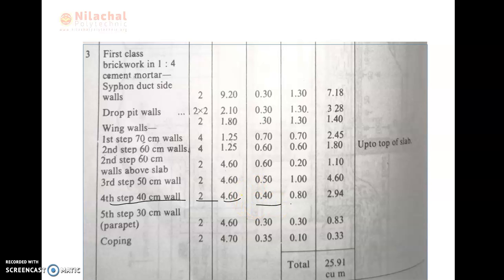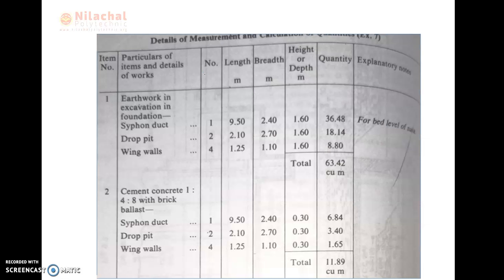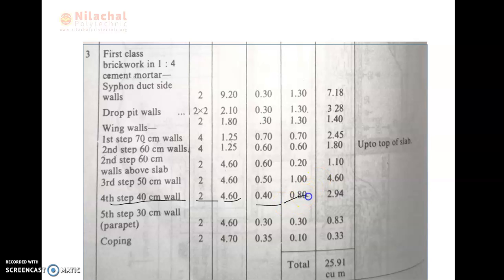Then we need to check the height. The height of the 40 cm wall is equal to 60 cm, and the breadth is 20 cm. We need to add the total value: 20 plus 60 is equal to 80 cm. So the total height is 80 cm. We write the height as 0.80 m. The total quantity is 2 × 4.60 × 0.40 × 0.80, which is equal to 2.94 m³.